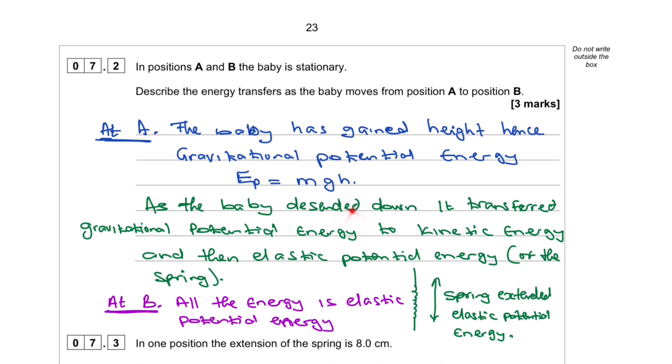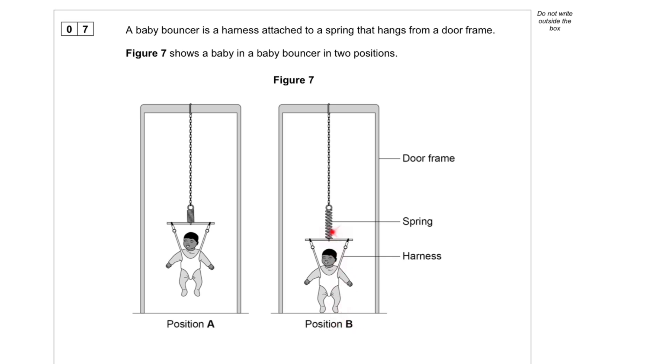As the baby descended down, it transferred gravitational potential energy to kinetic energy and then elastic potential energy of the spring.